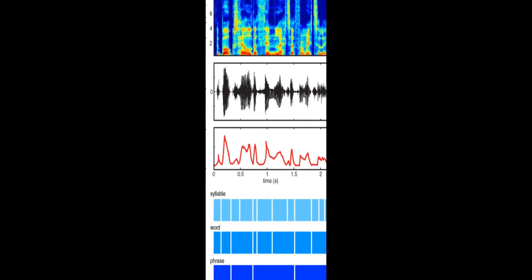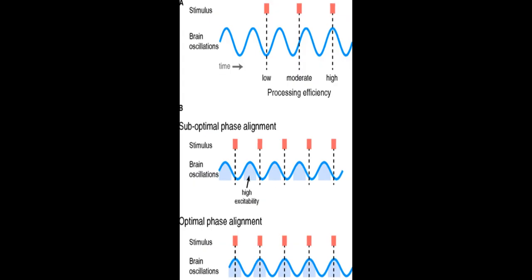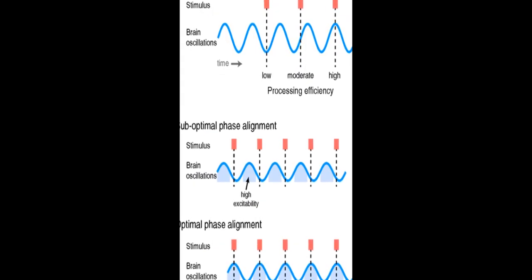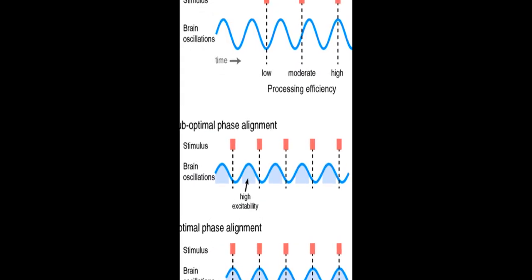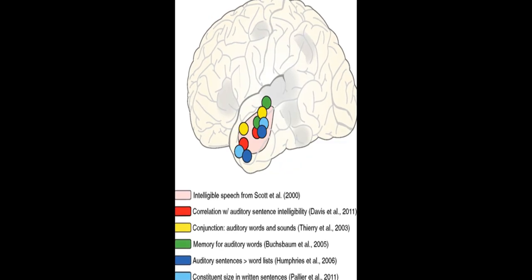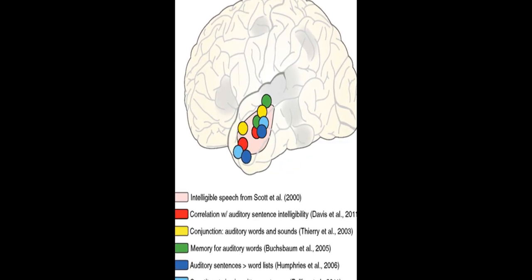Neuroimaging data shows that ongoing cortical oscillations phase lock to low-frequency information, 4 to 8 Hz, in the speech envelope, which helps increase sensitivity to relevant acoustic cues.